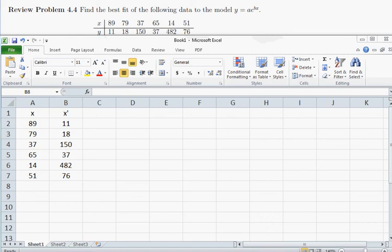Alright, let's take a look at review problem 4.4. We have the data 89, 11, 79, 18, and so on. I've already inputted those into Excel.